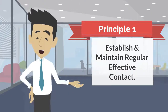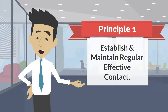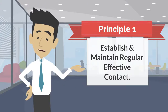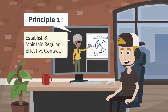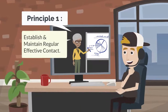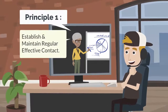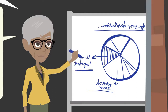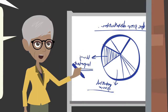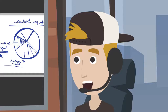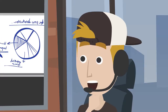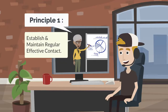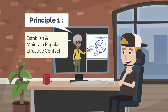Principle 1: Establish and maintain regular effective contact. Regular effective contact means that instructors should keep in contact with students on a regular and timely basis, both to ensure the quality of instruction and to verify performance and participation status.